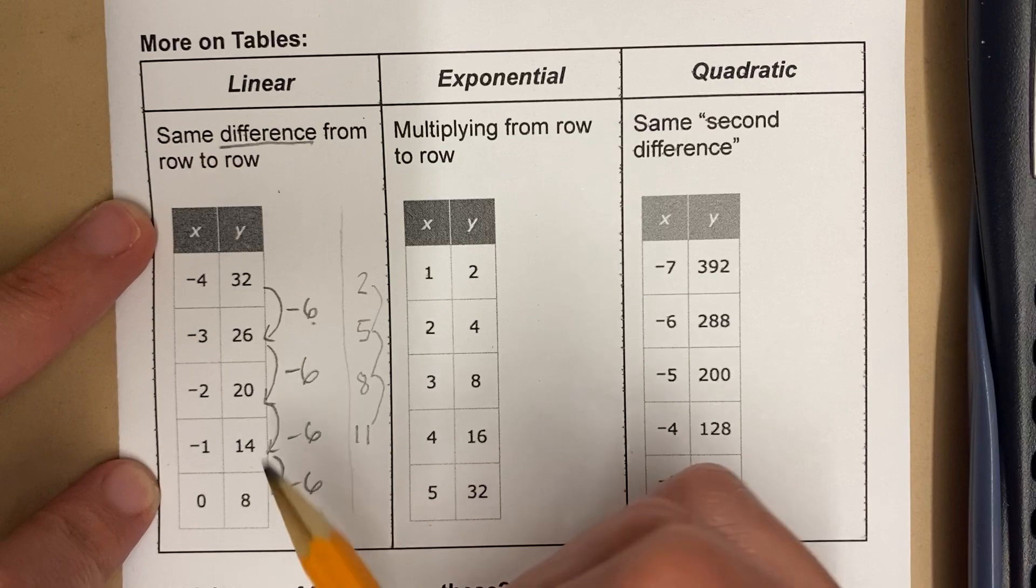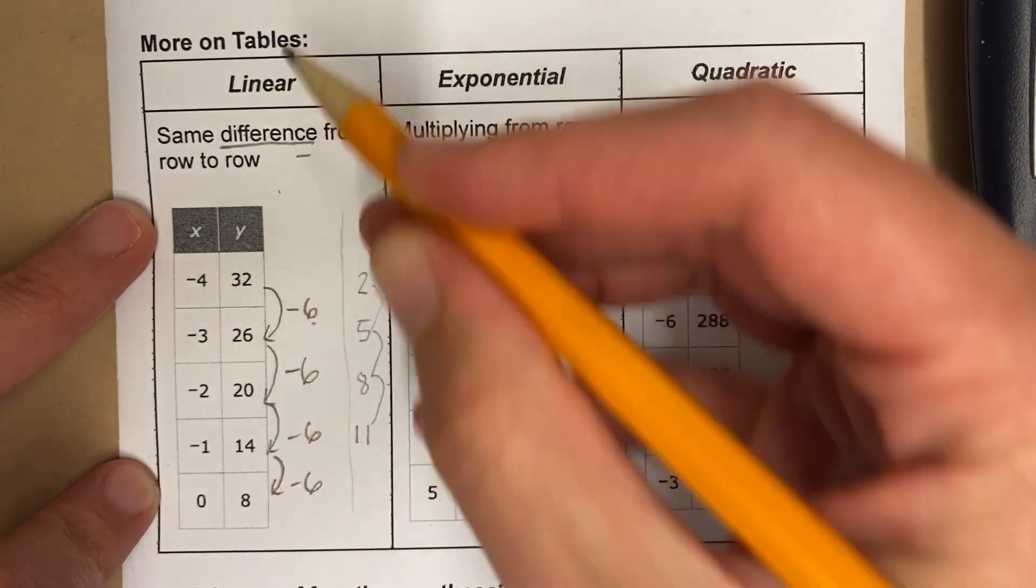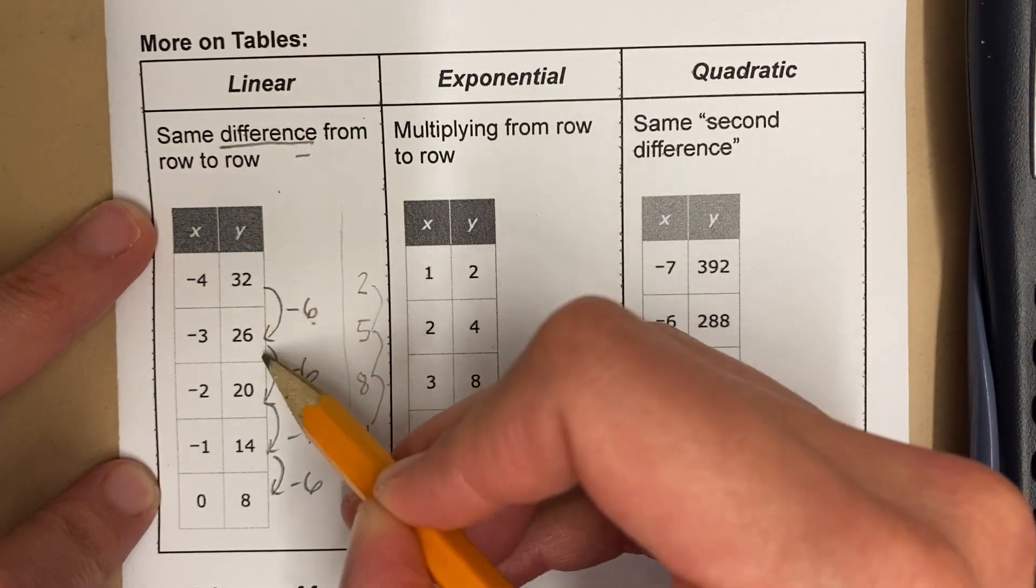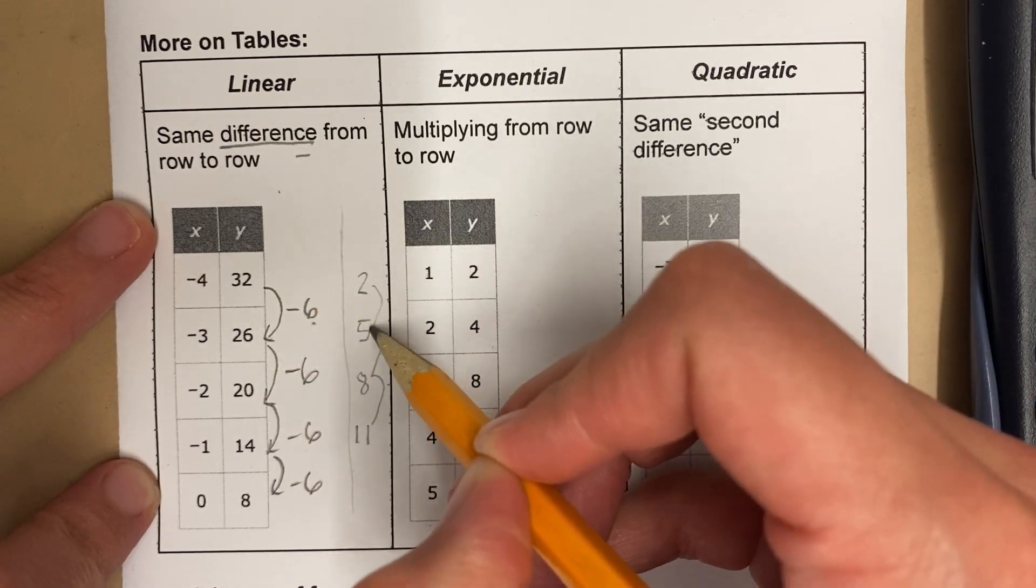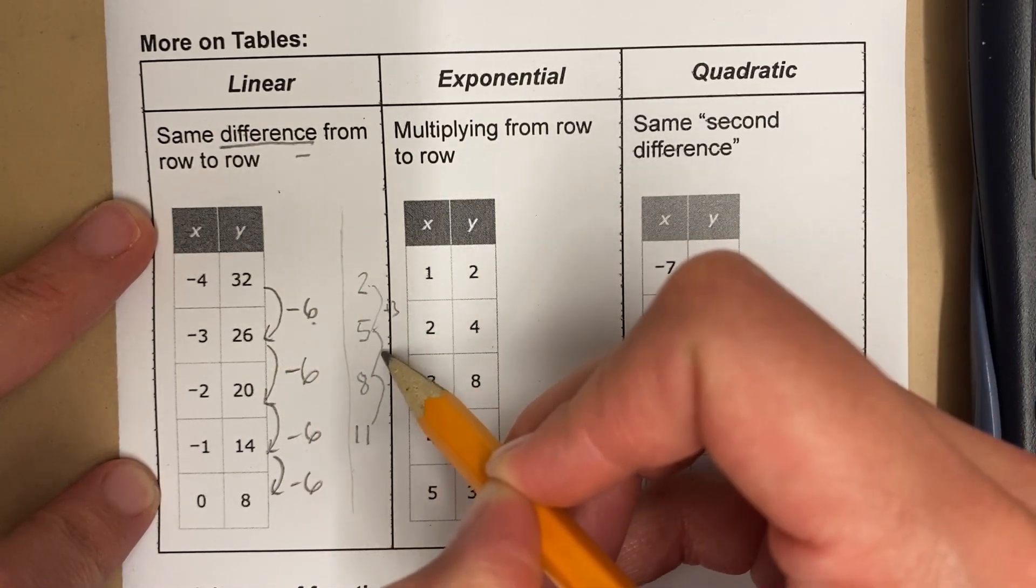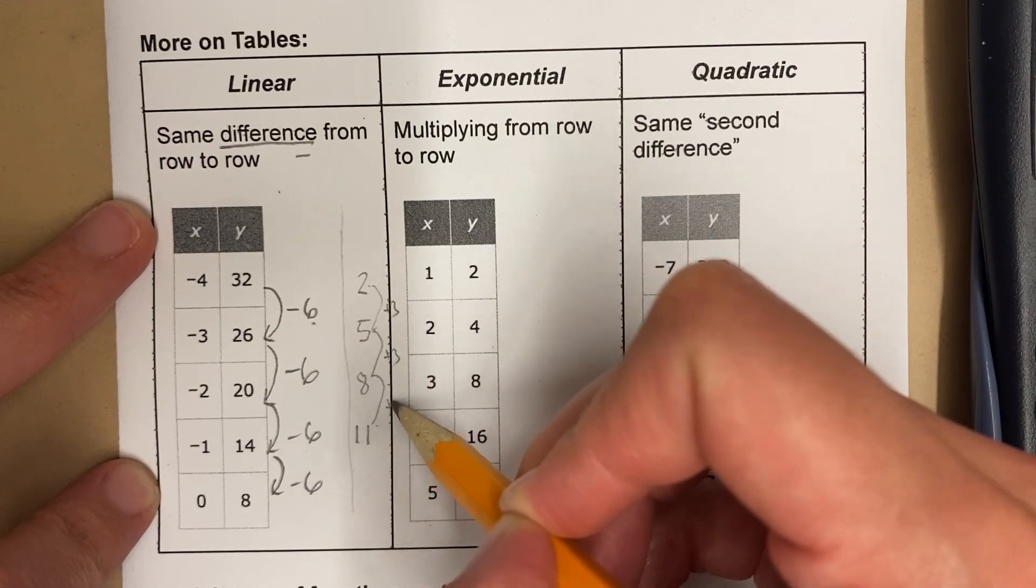That would be another example of a linear function. The same difference from row to row. Difference generally means subtract. The way I figure out how much it is from row to row is I subtract. This row minus this row, that would be plus 3.